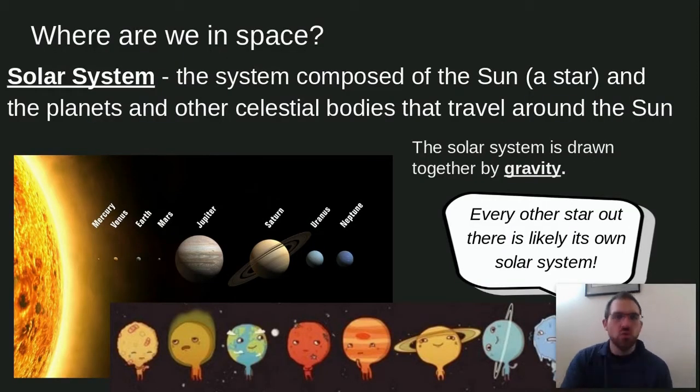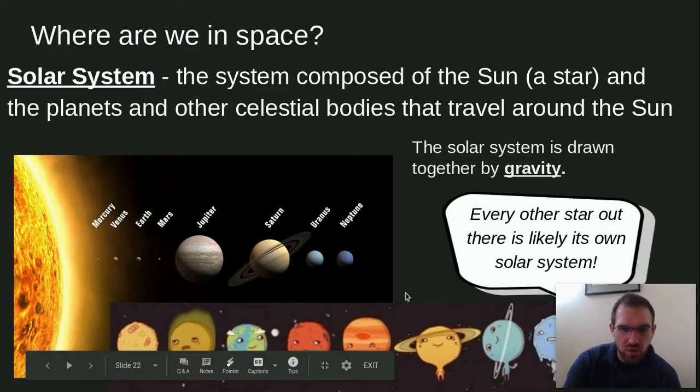So where are we in space? We're in the solar system. Please write this definition down. The solar system is a system. A system is just a bunch of moving parts that work together. So it's a system that's made up of or composed of the sun. The sun is a star, just like any of the other stars that you see. The only reason that our sun looks different than all those other stars you see in the night sky is because it's close to us compared to those other ones. That's it. That's the only reason why. And the planets and other celestial bodies that travel around the sun. So celestial bodies are just objects that are out in space. That would be considered to be any planets or moons or asteroids. Any of those things that are out there in space are considered to be celestial bodies.